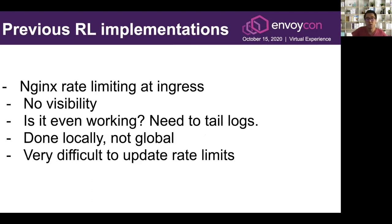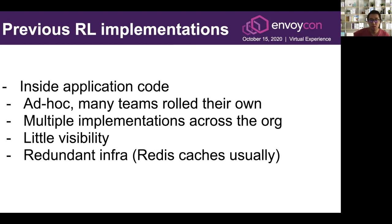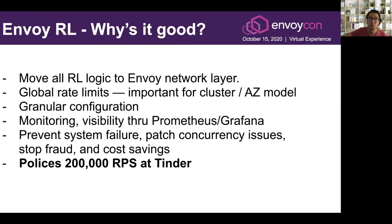Previous rate-limiting implementations at Tinder used Nginx at the ingress layer. The problem was there was really no visibility — you'd need to tail the logs to figure out if rate-limiting was even working or what was being rate-limited. It was all done locally, based on the number of requests certain Nginx hosts saw, not on the global request count. It was also very difficult to update rate-limits because you'd need to roll all the Nginx hosts. Secondly, there were implementations inside applications where many teams rolled their own rate-limiting code, resulting in little visibility, many different implementations across the org, and redundant Redis caches basically serving the same purpose.